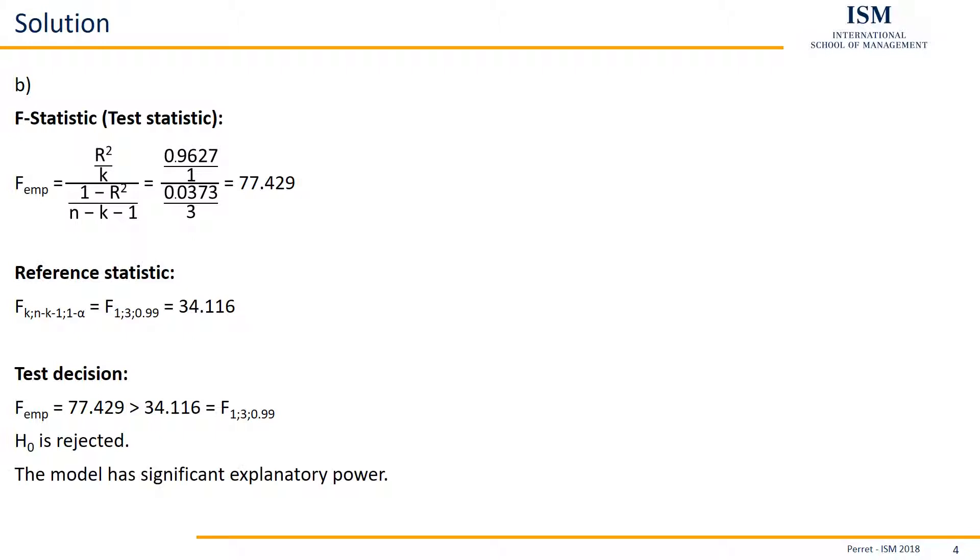So here we know our model has significant explanatory power. A different formulation for this would be, H0 could be that all our parameters, or all our coefficients, are zero. So here we have shown that there's at least 99% chance that one of the parameters is different from zero.